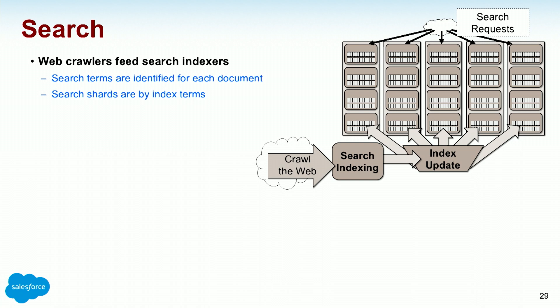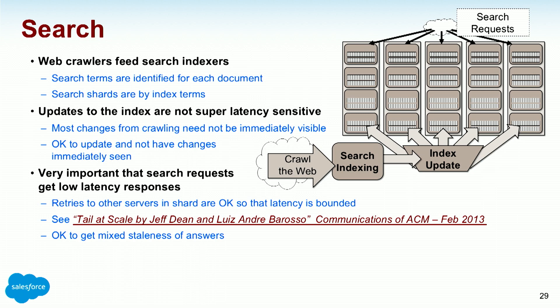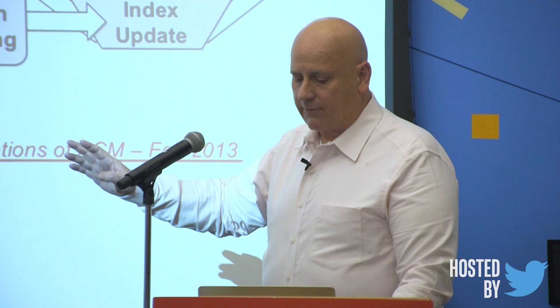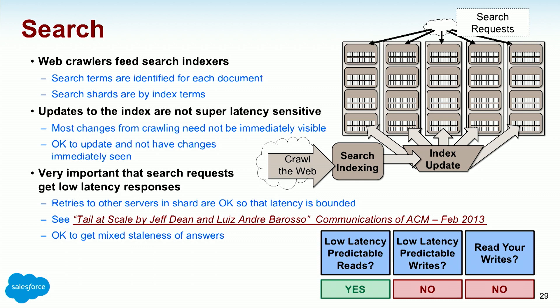Search is fascinating, especially for an old database guy who thought it had to be transactionally correct. It's okay to be non-transactional. Web crawlers search the index — updates to the index are not super latency sensitive, but search requests get low latency response. You should read 'The Tail at Scale' by Jeff Dean and Luis Andre Barroso, CACM February 2013. They do retries to bound the latency, but retries must be idempotent — it doesn't matter if you get the answer from a different server. They hit all partitions and get search info back; one laggard causes big latency problems. Fascinating issues for systems people, with lots of scale.